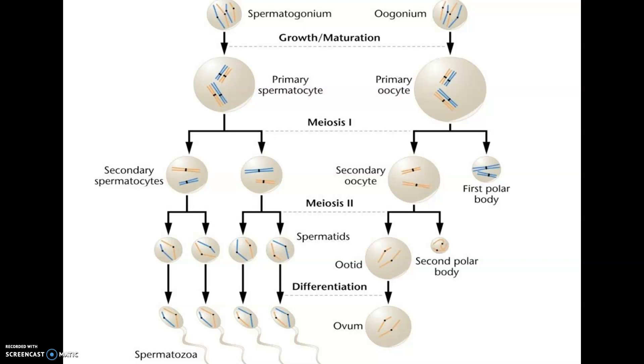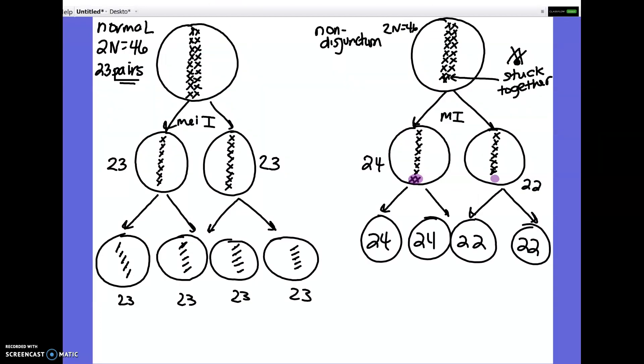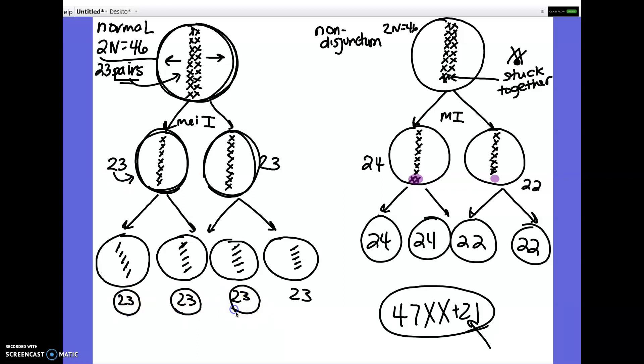So that is what happens in meiosis. Now, really quick, for the lab, for purposes of the lab, what happens, how do we get these disorders where somebody has, if you recall, like 47XX plus 21? How do you get a person with an extra chromosome 21? Well, just to show you really quick, here is normal meiosis. We're starting with 46 chromosomes. They line up. There's 23 pairs here. In meiosis 1, those pairs would separate. You'd end up now, after meiosis 1, with two cells that are haploid.